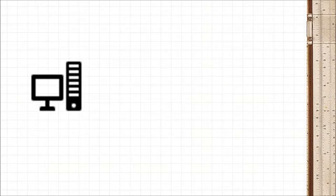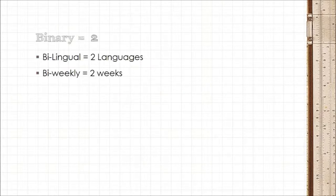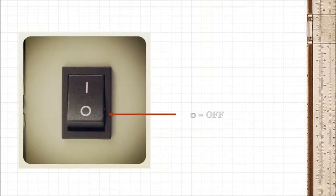You see, all data stored in your computer is stored in binary digits, or bits. The word binary denotes 2, just like bilingual, bi-weekly, or bicycle. A binary number can have a value of either 1 or 0, just like a switch can be on or off, or a gate can be opened or closed.